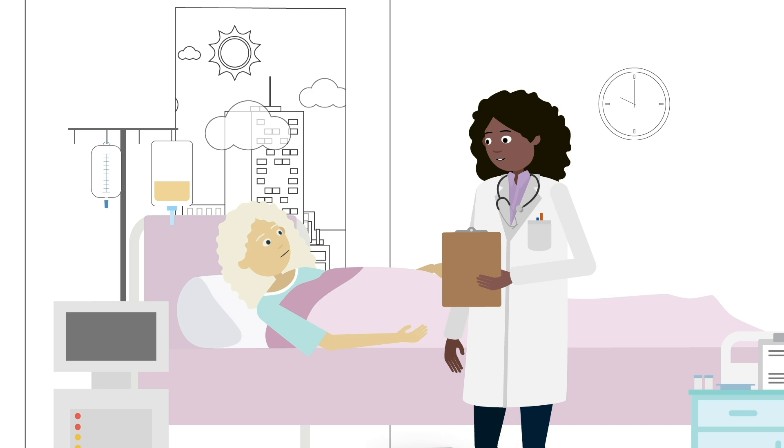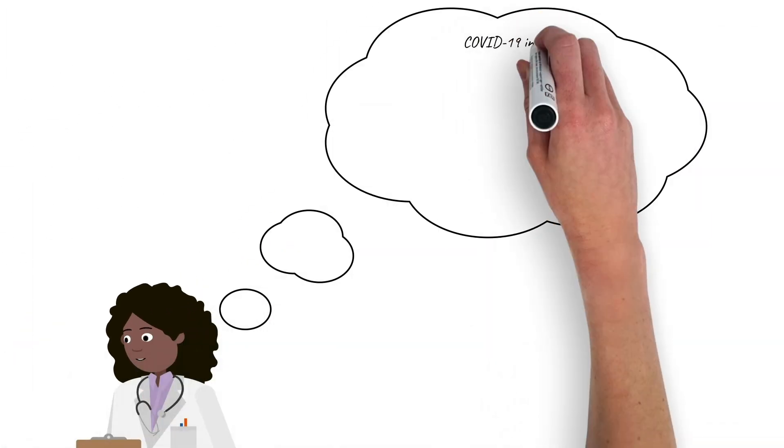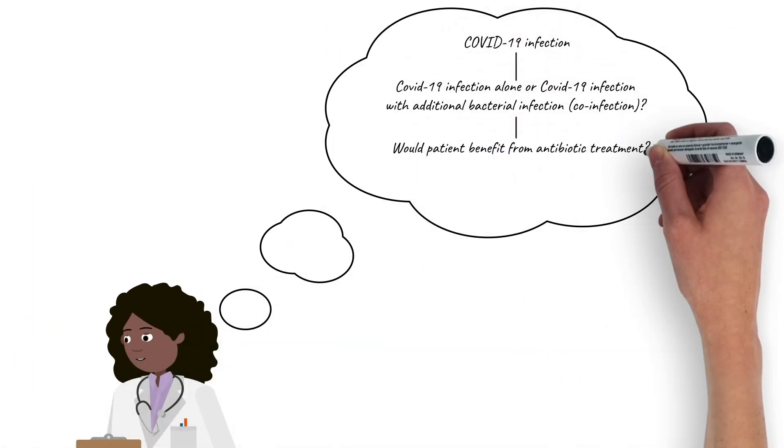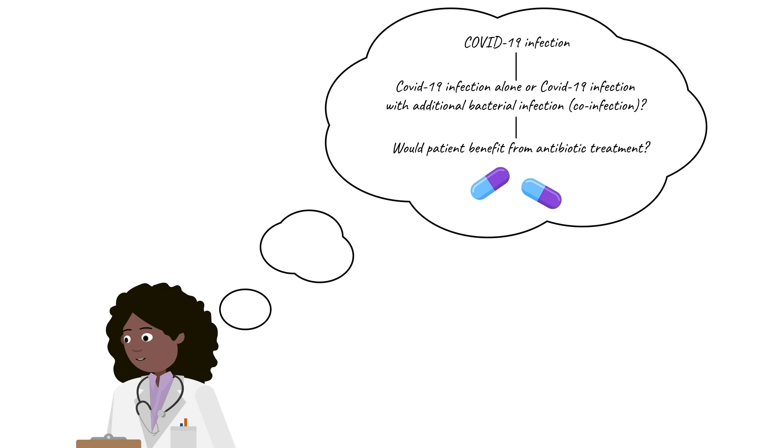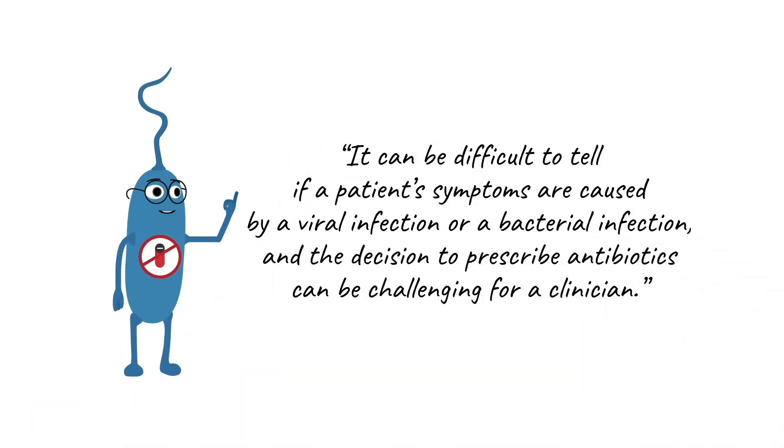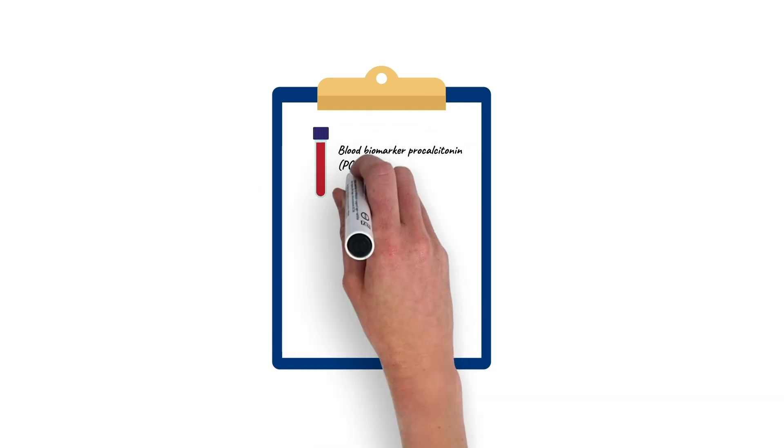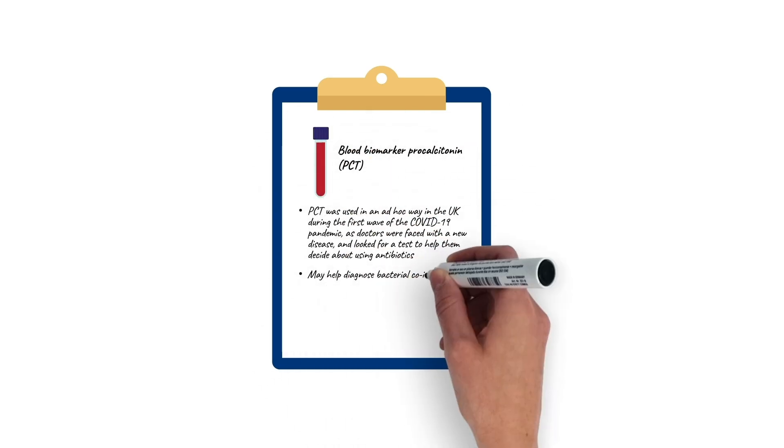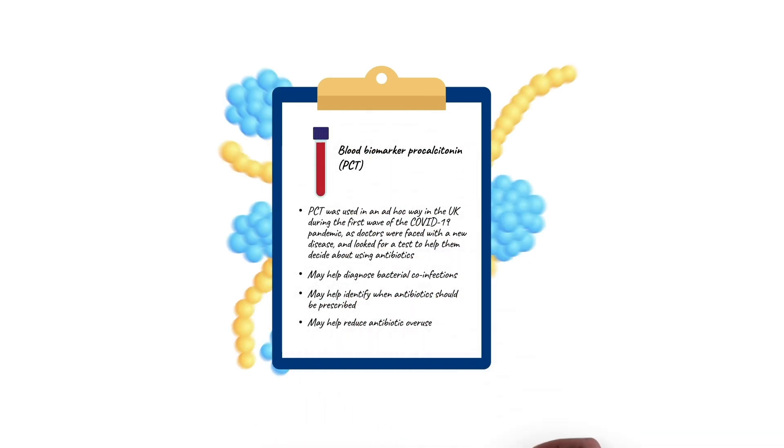Some COVID-19 patients have bacterial co-infections, but identifying who would benefit from antibiotic treatment can be challenging. A blood test called procalcitonin, or PCT, can help diagnose if bacterial infections are present.